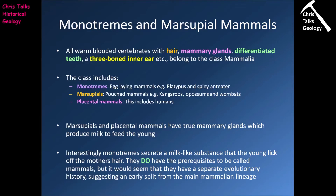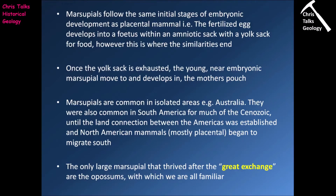The rest of the lineage carried on and later split to give us the marsupials and the placental mammals. Marsupials follow the same initial stages of embryonic development as placental mammals, suggesting a strong link between the two groups. In both groups the fertilized egg develops into a fetus contained within an amniotic sac with a yolk sac for food. However, in the case of marsupials, once the yolk sac is exhausted, the near-embryonic marsupial will then move to and develop in the mother's pouch.